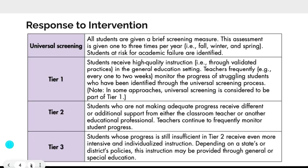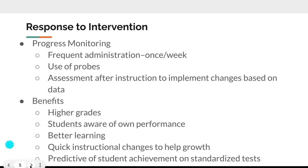In tier two, students who are not making adequate progress receive extra support from the classroom teacher or another professional, and teachers continue to monitor their progress. If students are still not making sufficient progress in tier two, they receive even more intense and individualized instruction. Depending on state or district policy, this instruction can be provided through general or special education.